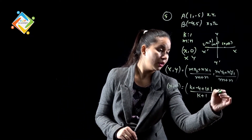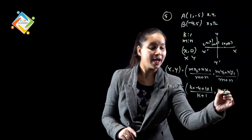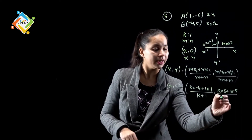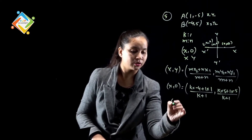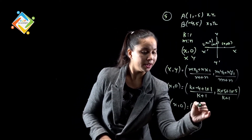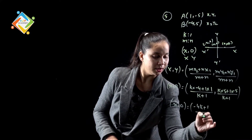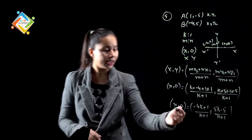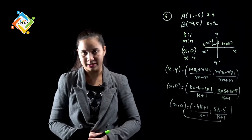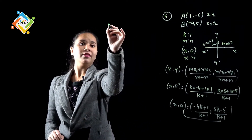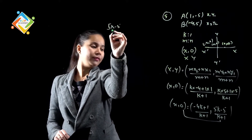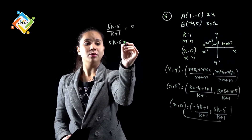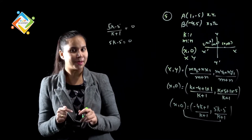Similarly, m*y2: m की value k और y2 की value 5, n की value 1 and y1 की value minus 5, upon m+n याने k+1. So x,0 = (minus 4k + 1)/(k+1), (5k - 5)/(k+1). And (5k - 5)/(k+1) is equal to 0.